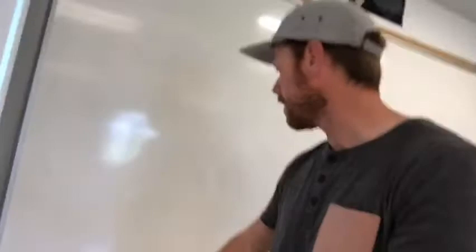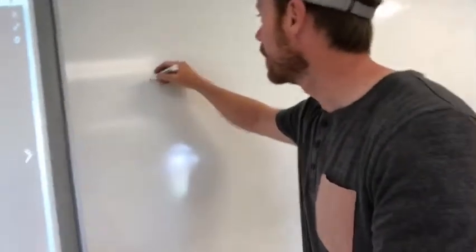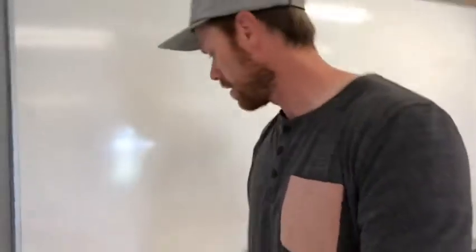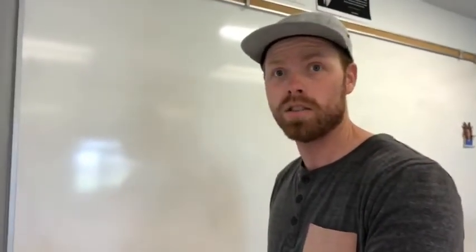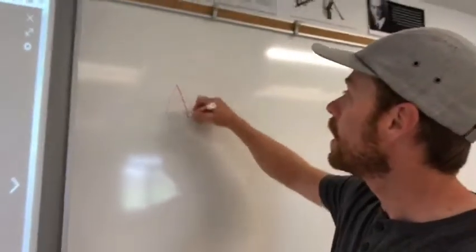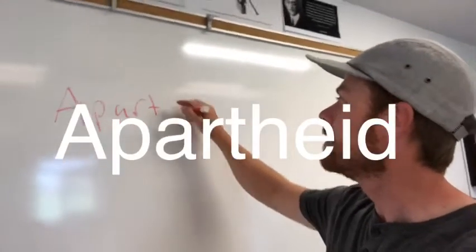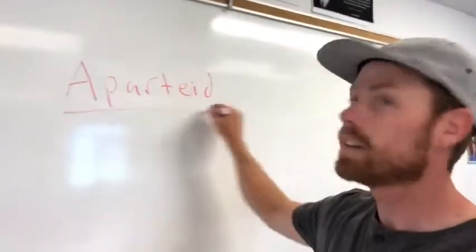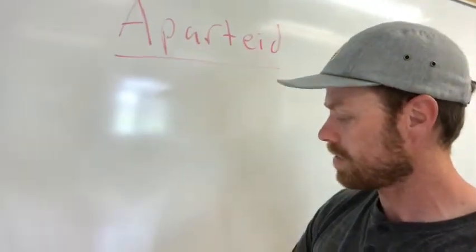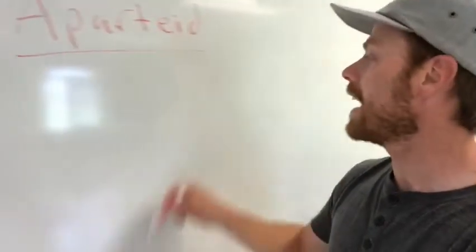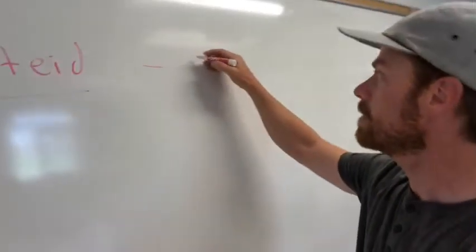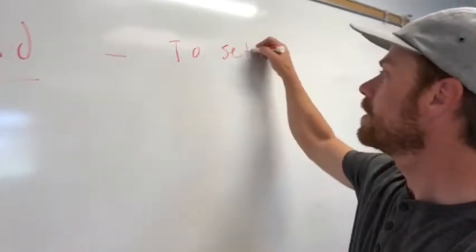When they formed the government, they passed a law known as the law of apartheid — I'm going to write that out on the board. The word 'apartheid' in Afrikaans or Boer language simply means 'to set apart.'